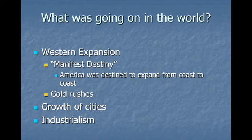Why would Emile Zola say such a thing? Well, we had Western expansion still going on in the United States — the idea of manifest destiny, where America was destined to expand from coast to coast. The gold rushes were also going on at this time, creating this sense of nature and community becoming more important than the individual. Also, as America was still taking shape, you're going to notice the growth of cities and the rise of industrialism. The environment was changing and becoming ever more populated, and these things were going to start affecting the way humans live.